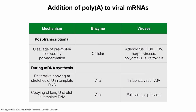Comparing polyadenylation for DNA viruses versus RNA viruses: for DNA viruses, the enzyme is cellular and polyadenylation occurs by cleavage of pre-mRNA at the polyA addition site followed by polyadenylation — not encoded in the template. For flu and VSV, polyadenylation is caused by reiterative copying at stretches of U in the template. For polio and alphaviruses, the polyA actually copies an encoded stretch of U in the genome. DNA viruses resemble flu and VSV in that the polyA is not directly encoded.